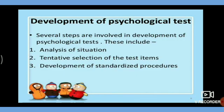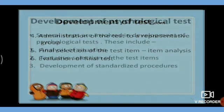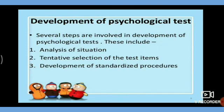Several steps are involved in the development of a psychological test: analysis of the situation, tentative selection of the test, development of standardized procedures, administration of the test to a representative group, and final selection of the test. In the planning and item generation stage, items are collected from different sources and can be derived from already existing tests or from theories.